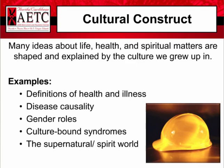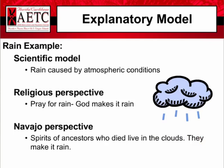There are also concepts such as evil eye, where someone looks at you wrong and you can get sick, or the idea that illness is due to God's will. Here in the U.S. we use the scientific model for explaining phenomena around us. Different cultures explain the same phenomena differently. Let's use the example of rain. In the scientific model, rain is due to atmospheric conditions. In the religious model, rain is from God, so you pray for rain. In the Navajo model, the spirits of the ancestors who live in the clouds make it rain. If a person is raised with one belief system, it is difficult to change their worldview and how they define health and illness.